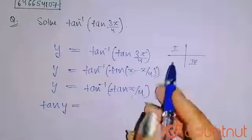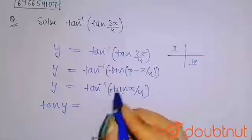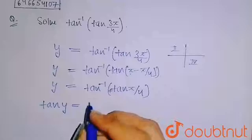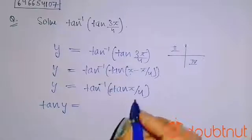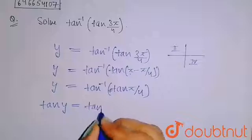So here tan inverse tan π by 4. Here I am getting tan inverse tan π by 4, so this will give you tan π by 4, because this is gone to that side. Now here, my y will be equal to π by 4.